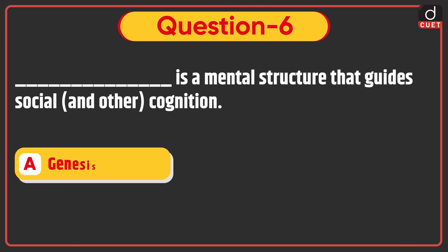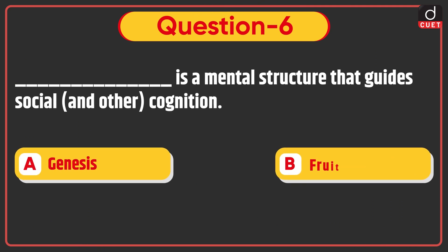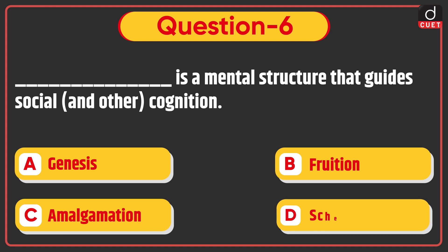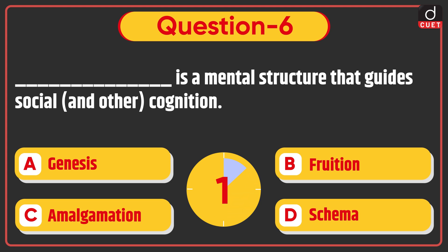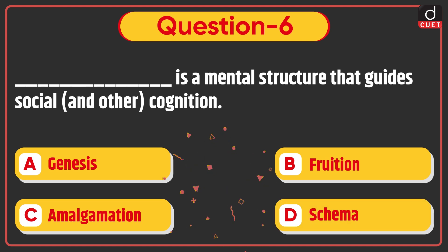Next question: Dash is a mental structure that guides social and other cognition — Genesis, Fruit, Amalgamation, or Schema. The correct answer is option D, Schema.